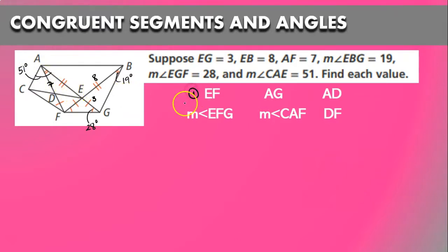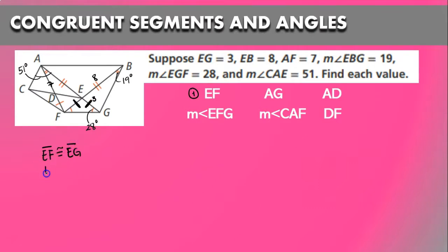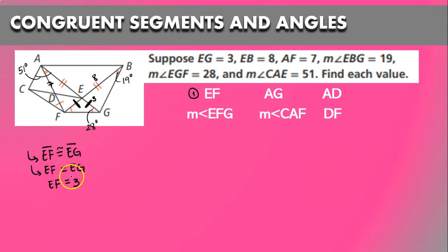The first value is EF. As we can see, EF has a single tick mark, which is shared with EG. That means segment EF is congruent with segment EG, so EF is equal to EG, which means EF equals 3. It's very important to first state congruence before saying the measurements are equal — skipping that step could cost you points.